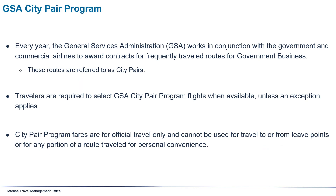Every year, the General Services Administration works in conjunction with the government and commercial airlines to award contracts for frequently traveled routes for government business. These routes are referred to as city pairs. Travelers are required to select GSA city pair program flights when available unless an exception applies. City pair program fares are for official travel only and cannot be used for travel to or from leave points or for any portion of a route traveled for personal convenience.